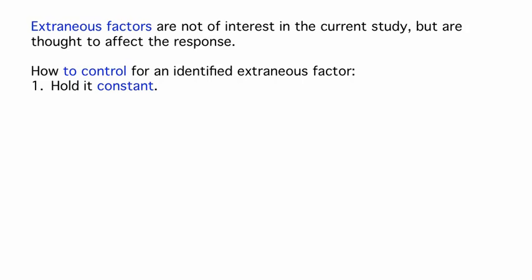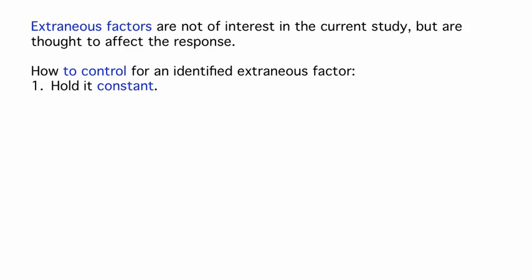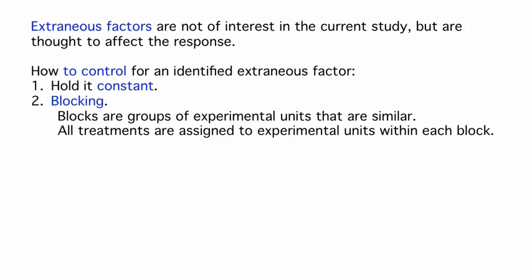The second method of controlling for extraneous factors is to use blocking. A block is a group of experimental units that are similar in the extraneous factor, and all treatments are randomly assigned to experimental units within each block. If we wanted to study the effects of the vaccine and include different age groups which might have differential response, we can treat age group as a block and randomly assign treatments within each age group, so in each age group we have subjects who both receive the vaccine and do not.